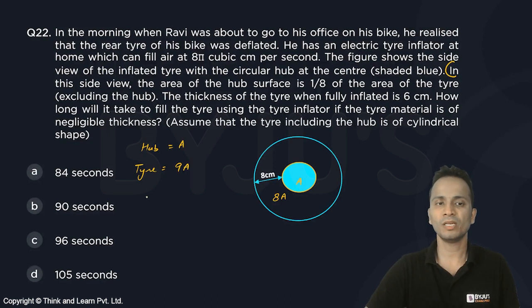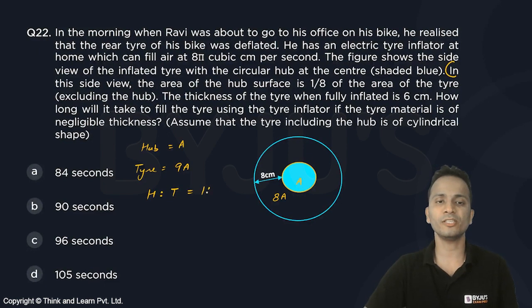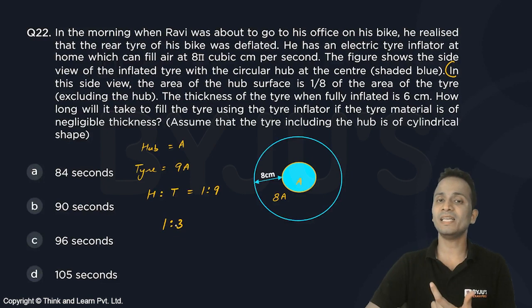The ratio of the areas of hub and the entire tire is 1:9. If this is the ratio of their areas, then the ratio of their radius will be square root of this, that is 1:3. So the ratio of the radius of the hub and the entire tire is equal to 1:3.